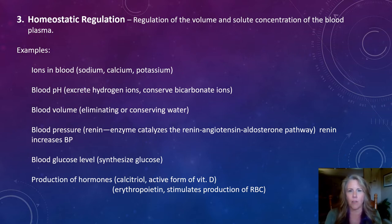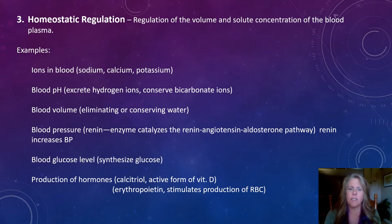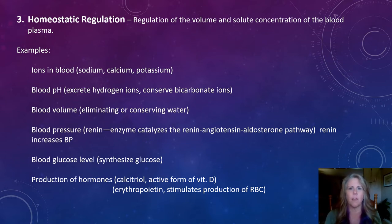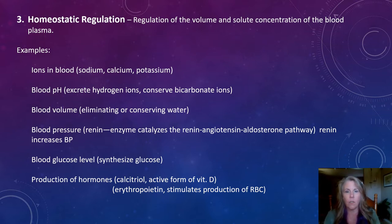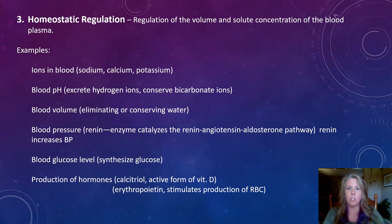A third example is blood volume — the total amount of blood running through our blood vessels. The kidneys regulate blood volume by filtering the blood plasma, the liquid portion of the blood. If we eliminate more of that liquid, forming more urine, we decrease total blood volume. If we conserve that water, we increase or maintain our total blood volume.